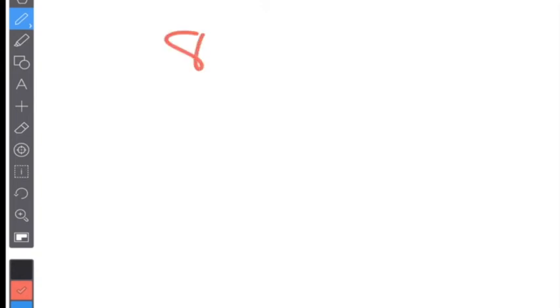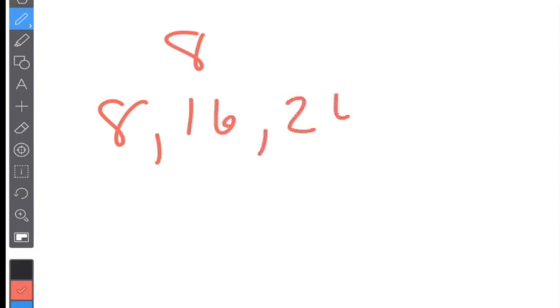Multiples — if I give you a number, you need to give me the multiples. So like eight: you would say eight, 16, 24. I think you know how to do that.